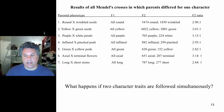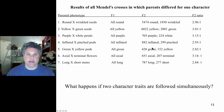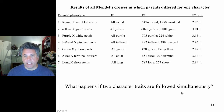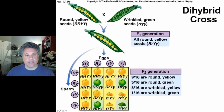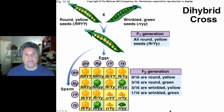We had left off talking about the monohybrid crosses that Mendel had performed, which led to his discovery of the first law of heredity. Now we're going to consider what happens if two character traits are followed simultaneously, which led Mendel to his second law of heredity called the law of independent assortment.